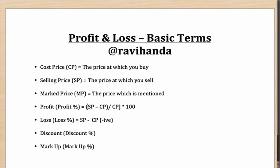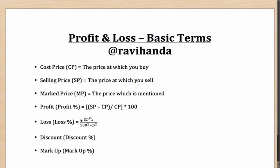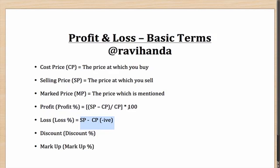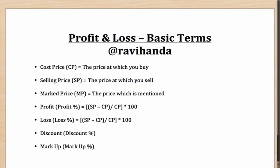Profit percentage as well as loss percentage are given by the same formula: selling price minus cost price, divided by the cost price, multiplied by 100. The same formula can be used for calculating your loss also — the difference is that in that case it will come out as a negative percentage.